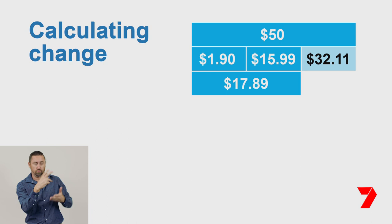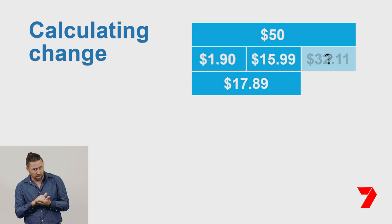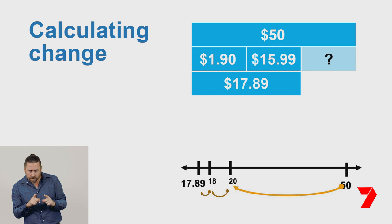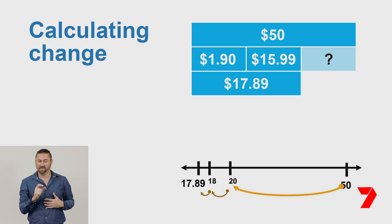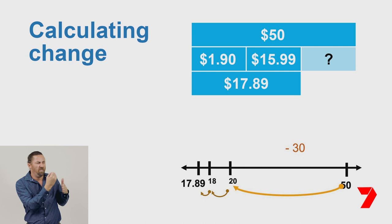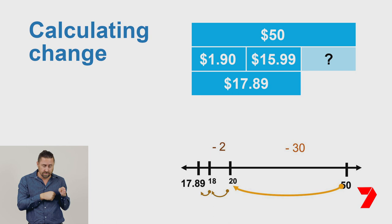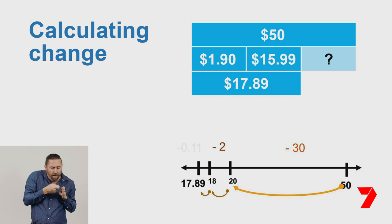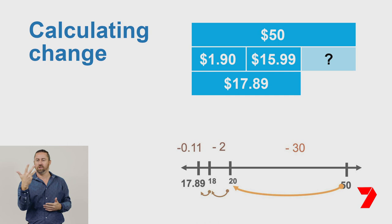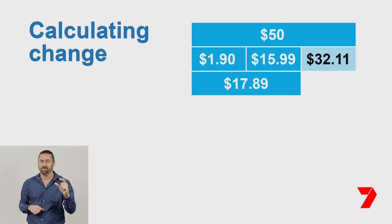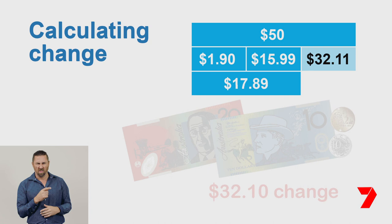Let's check our answer by doing another method. Calculate the change by counting back from $50 to $17.89. Take away $30 to get to the nearest $10, that's $20. Then count back another $2 to get to the nearest whole dollar, that's $18. Then count back another $0.11 to end up at $17.89. Our change is $32.11 again. We have checked our answer. This is an impossible amount to give in change, so we round it to $32.10.